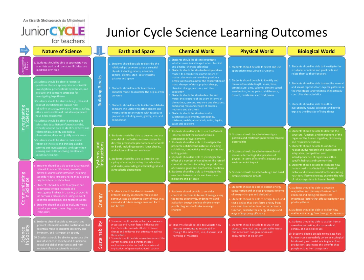This is the layout of the Junior Cycle Science course — all the learning outcomes you need to have met over the three years. They're extremely broad. For example, Earth and Space asks students to describe relationships between various celestial objects, including moons, asteroids, comets, and planets. Another asks you to develop and use a model of the Earth-Sun-Moon system to describe predictable phenomena, including seasons, lunar phases, and eclipses. A biology one asks you to describe the structure, function, and interactions of the organs of the human digestive, circulatory, and respiratory systems. They're very broad, so guiding your study from just this document can be very difficult.